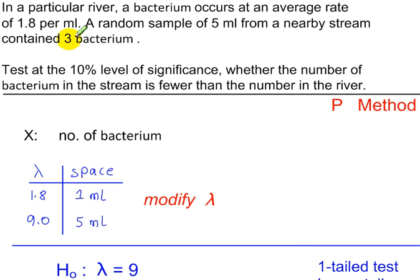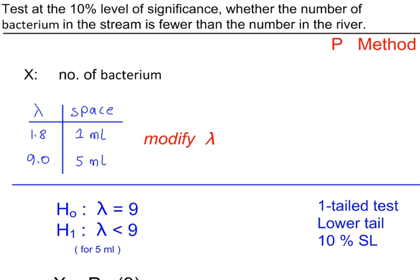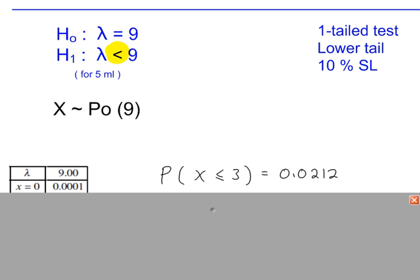The test value is 3. And we're testing for less than in H1. So we calculate the probability that x is less than or equal to 3, and then compare this with the 10% significance level.